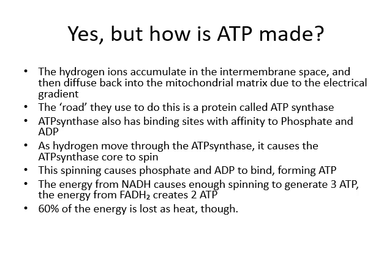So these electrons go from the electron transport chain, hydrogen is pumped, and then hydrogen comes back down the electrical gradient, causes the ATP synthase to spin, and from the spinning we have 3 or 2 ATP. However, it's a pretty inefficient process — we're using more energy forcing the electrons to move from place to place than actually generating ATP, and about 60% of it runs off as heat.